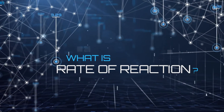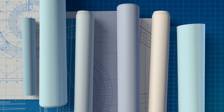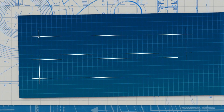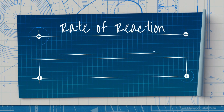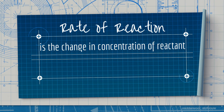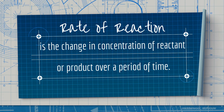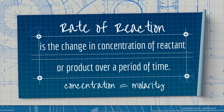Let's start by looking at what Rate of Reaction is. Rate of Reaction is the change in concentration of reactants or products over a period of time. This means we can measure the rate of reaction by observing the change in concentration of reactants or products. The term concentration here represents molarity. However, in some cases, the rate of reaction can also be determined by observing the pressure of gases if the reaction is done in gas phase.